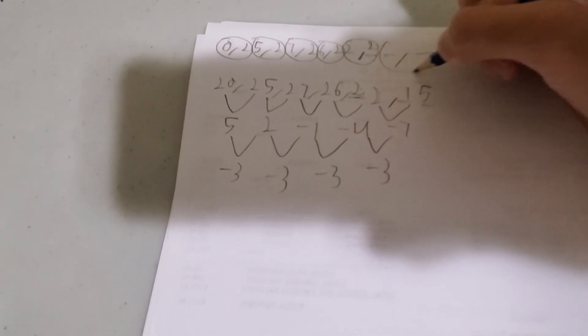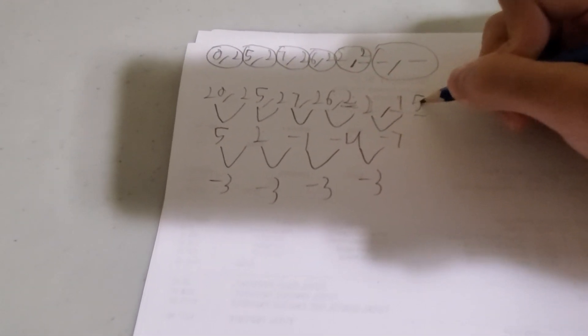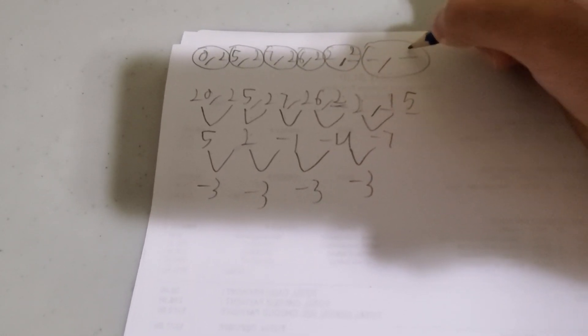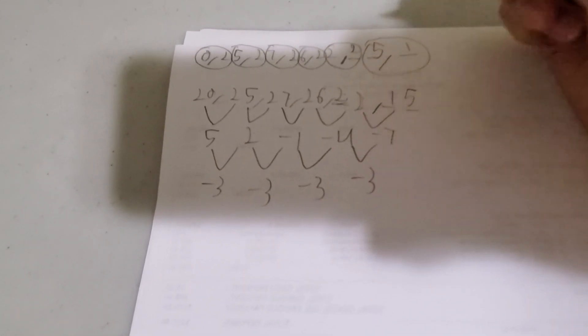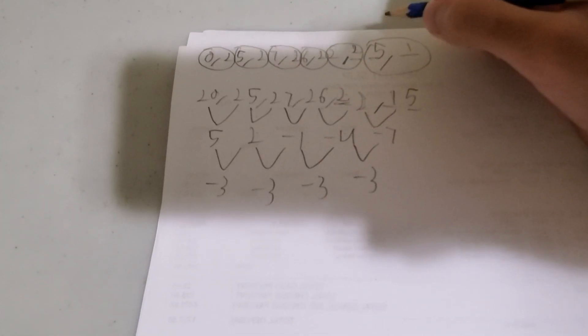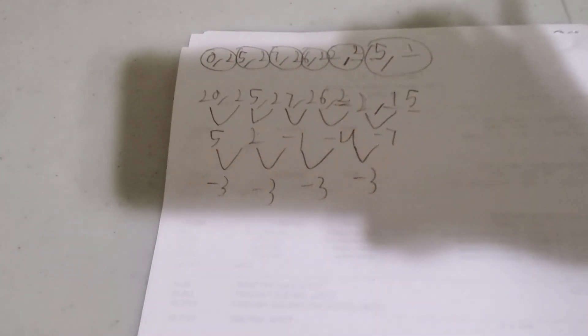And we circle these two again, and we have to write 15 backwards. So 15 like that. So let's review. We got our answer.